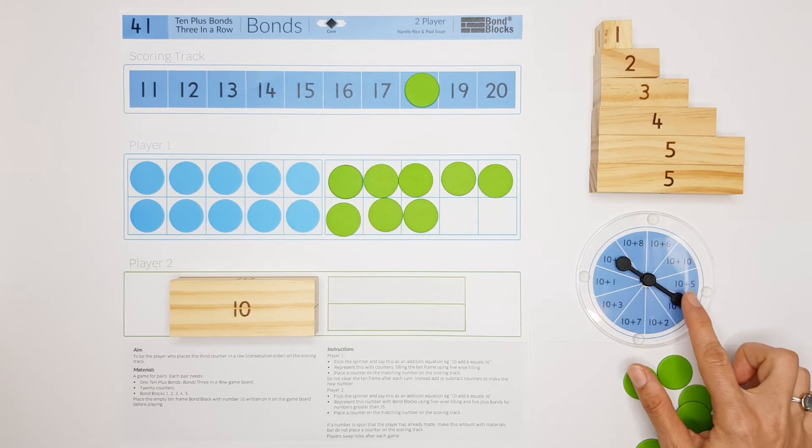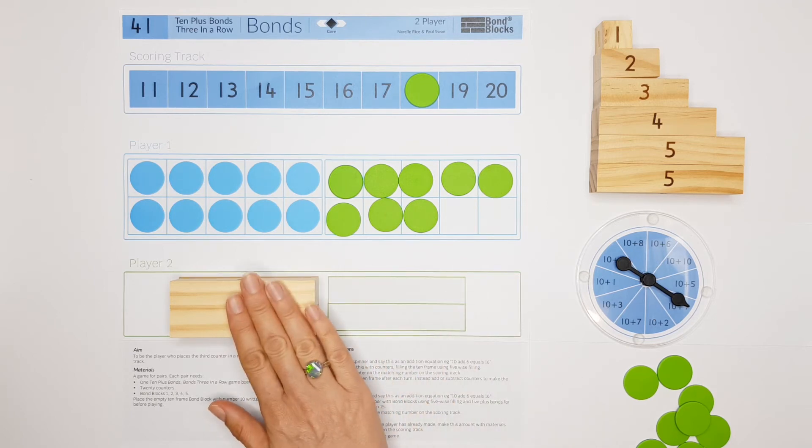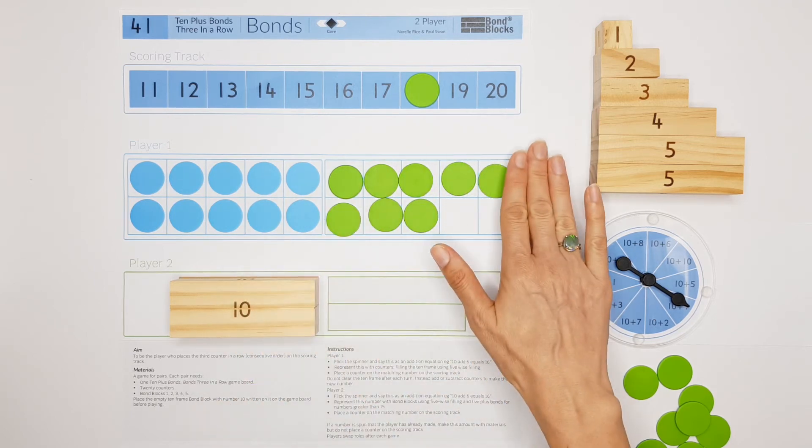Player 2 has their turn. They spin 10 add 9 to make 19. Player 2 always uses the bond blocks; player 1 always uses the counters.